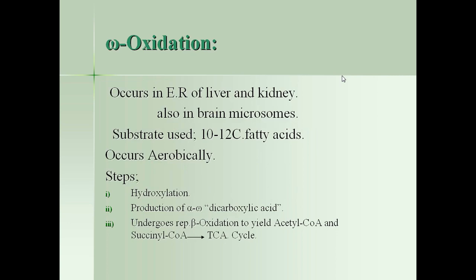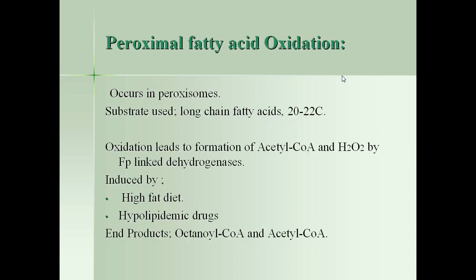Omega-oxidation occurs in the endoplasmic reticulum of liver and kidneys, also in brain microsomes. The substrate used is 10- to 12-carbon fatty acids, in which hydroxylation occurs, producing dicarboxylic acids that undergo beta-oxidation to yield acetyl-CoA and succinyl-CoA, further oxidized in the TCA cycle.